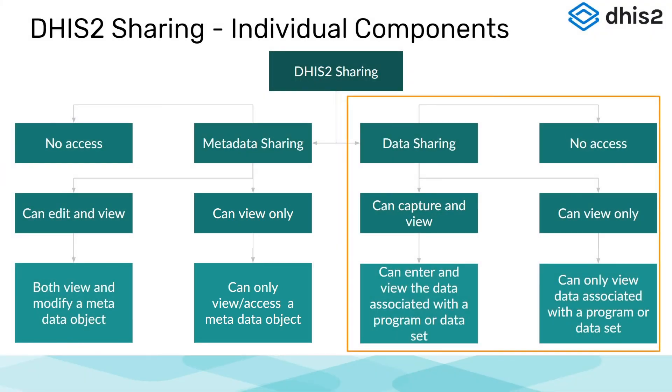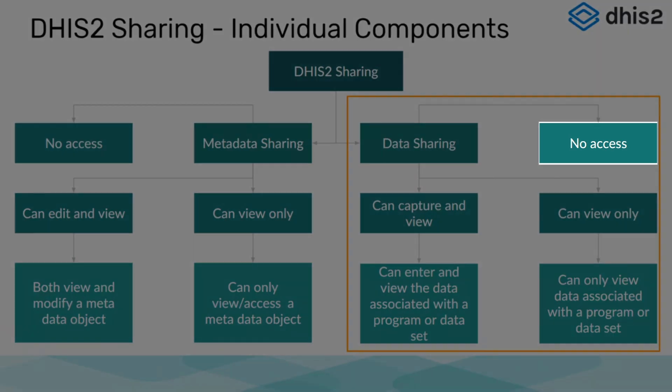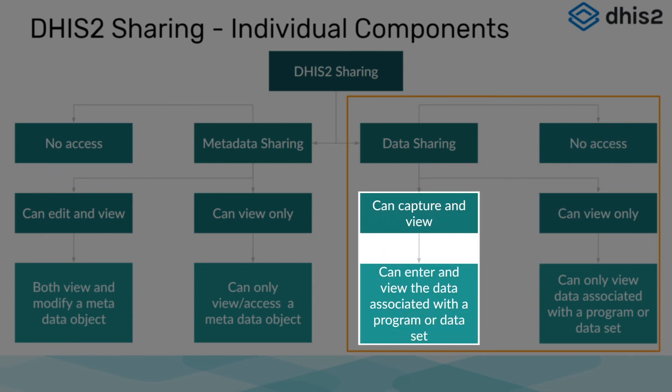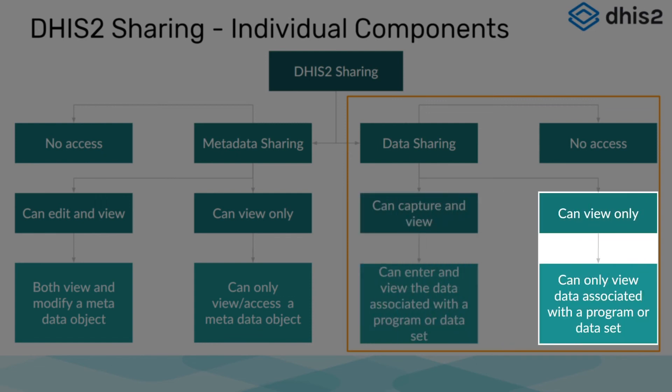For data sharing, there are also three components. The first component is no access, meaning a user or user group will not be granted access to the program or dataset at all. The second component is can capture and view, which allows a user or user group access to both enter data and view data associated with a program or dataset — they can only enter data if they have a user role which allows them to do so. The last component is can view only, which allows a user to only view data associated with the program; they will not be able to enter data associated with that particular program.